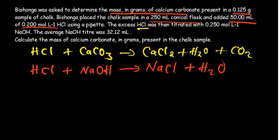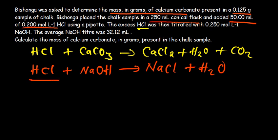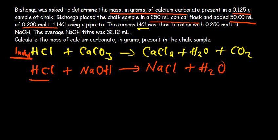So this is what back titration is all about. We have the same reactant in the first reaction, and then it reacts again in the second reaction — there's an aspect of it being in excess. We are trying to determine what was in excess, and then subtract the initial number of moles minus the excess, to get how much had reacted in the first reaction. The moles that reacted in the first reaction will help us determine the number of moles of calcium carbonate using stoichiometry.